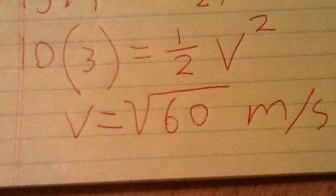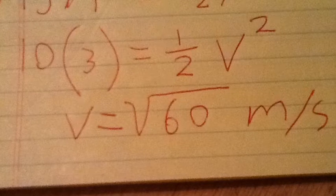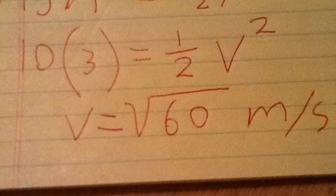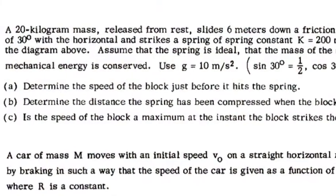Canceling out the m's, and substituting in 10 for g as given, h is 3 meters, and solving for v, we get v equals the square root of 60 meters per second. That was part A.